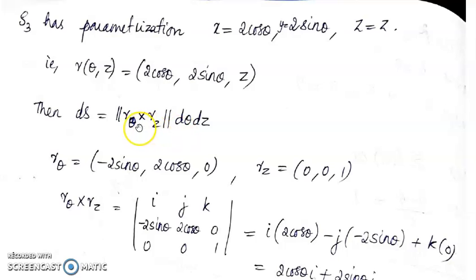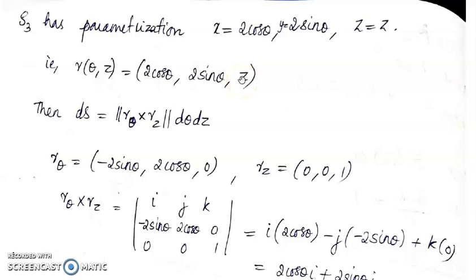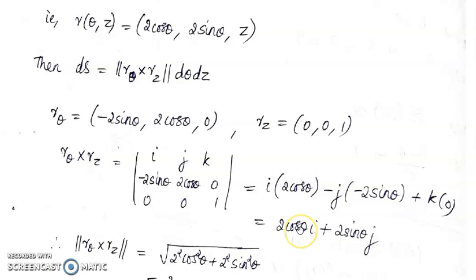Computing the partial derivatives: r_theta is (minus 2 sin theta, 2 cos theta, 0) and r_z is (0, 0, 1). Taking the cross product r_theta cross r_z, we get the determinant which evaluates to 2 cos theta i plus 2 sin theta j. The absolute value of r_theta cross r_z is root of (2 cos theta squared plus 2 sin theta squared), which equals 2. So ds equals 2 d theta dz.